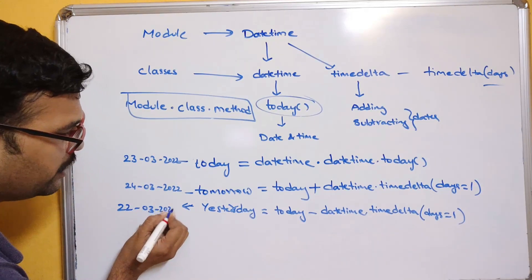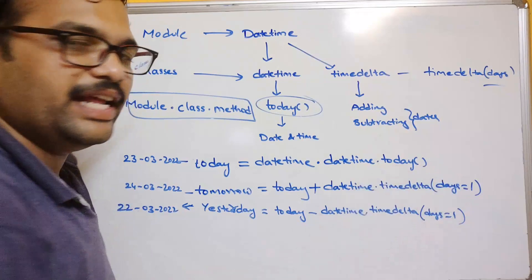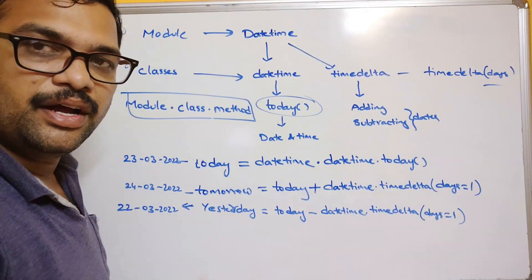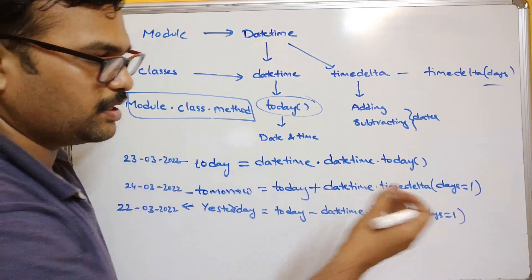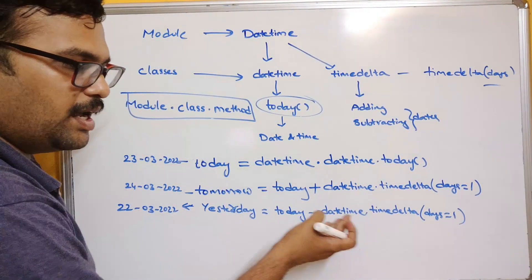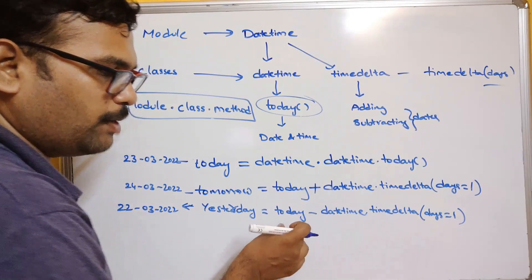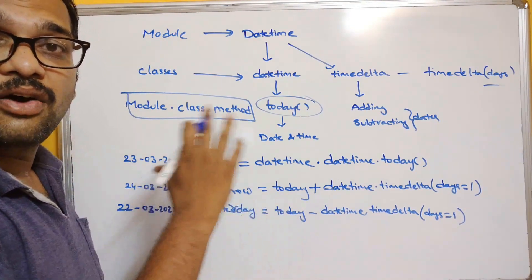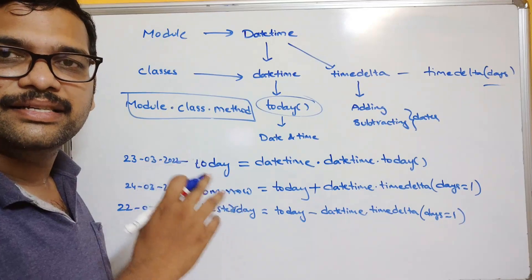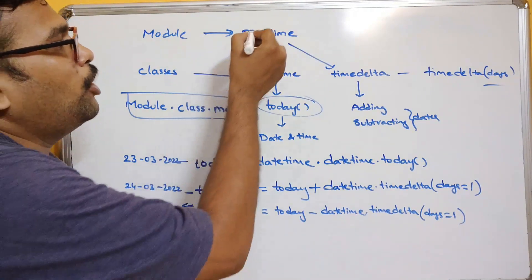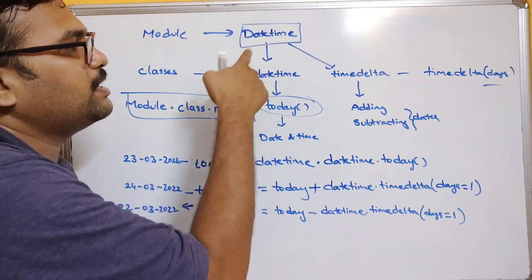If you want to add five days, simply give days=5. If you want to subtract five days, give days=5 and subtract from today. This is how we can work on dates in Python using the datetime module.